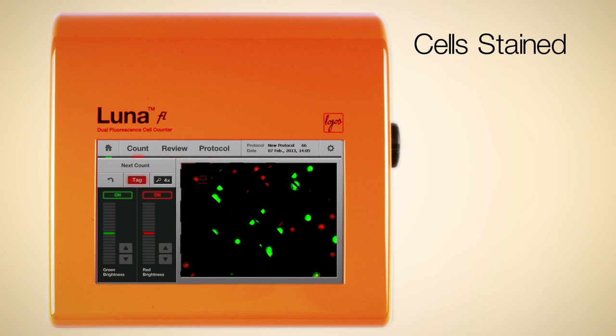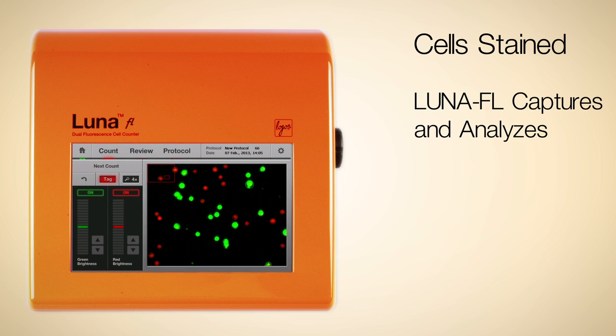Cells are stained with green and red fluorescence dye. The Luna FL captures and analyzes three different images: bright-field, green fluorescence, and red fluorescence.